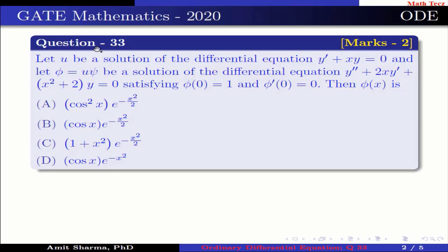Question number 33. Let u be a solution of the differential equation y' + xy = 0, and let φ = u·ψ be a solution of the differential equation y'' + 2xy' + (x² + 2)y = 0.